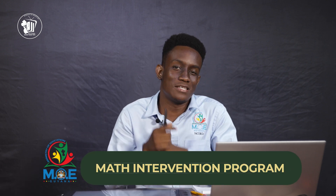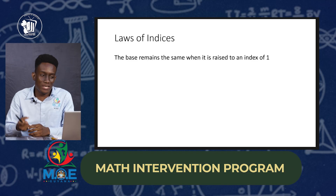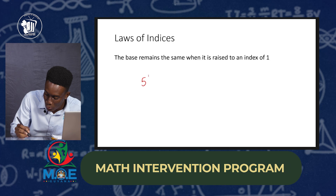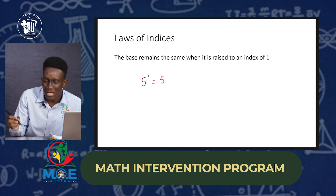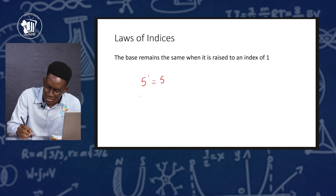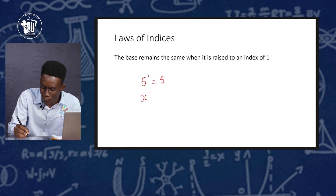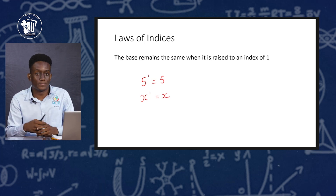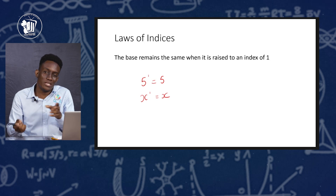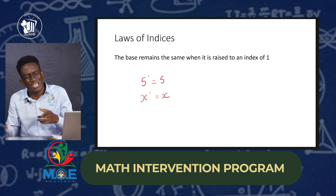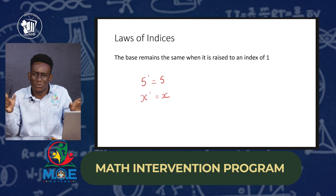So let's look at the next law, which is pretty straightforward. It says the base remains the same when it is raised to the power of 1. So 5 raised to the power of 1 is the same as 5, and x raised to the power of 1 is the same as x. In reverse, if you don't see a power written, that base is raised to the power of 1 — and we discovered this while working through the examples.